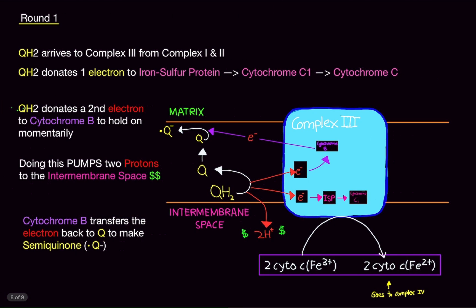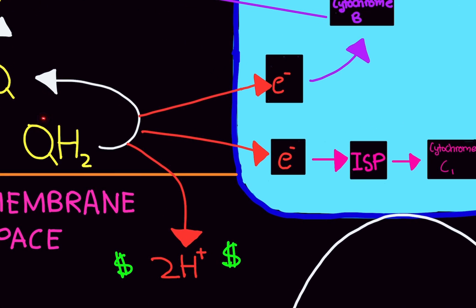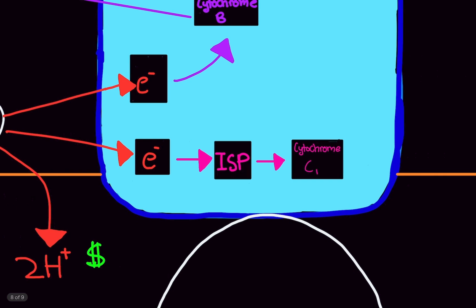So, let's do round one. What is happening here? So, ubiquinol is going to arrive to Complex 3 from Complex 1 and Complex 2. Now, one of the electrons is going to go to this iron sulfur protein, ISP. And then it's going to go to cytochrome C1. What it's basically doing is these proteins are essentially just holding on to the electrons momentarily.